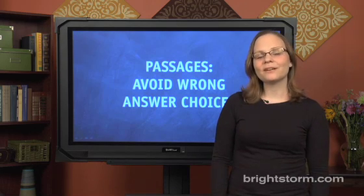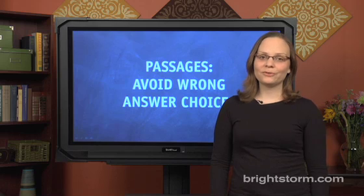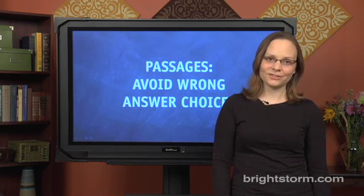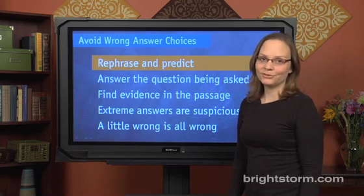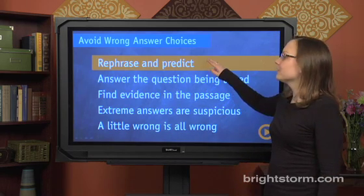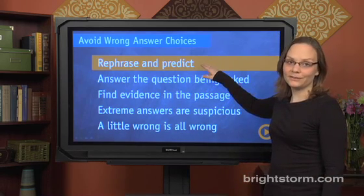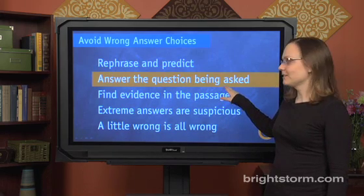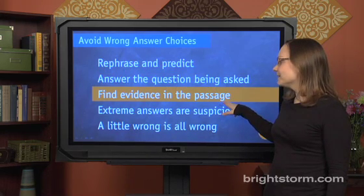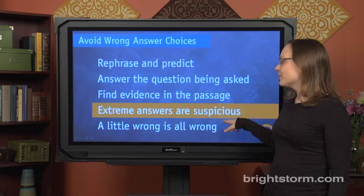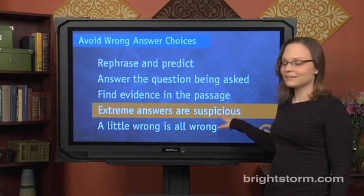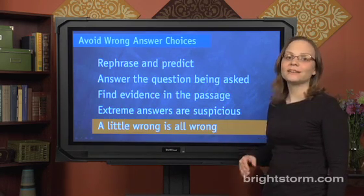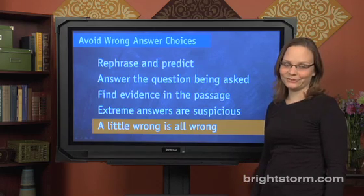In this episode, we're going to talk about how to avoid wrong answer choices when reading the passages in the critical reading section. There are five main principles you should keep in mind: rephrase the questions and predict the answers; answer the questions being asked of you; find evidence in the passage; remember that extreme answers are suspicious; and keep in mind that a little wrong is all wrong when it comes to SAT answer choices.